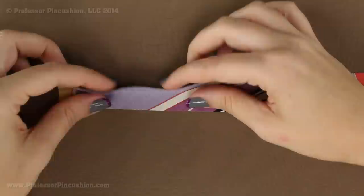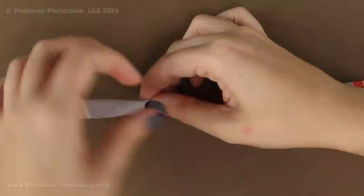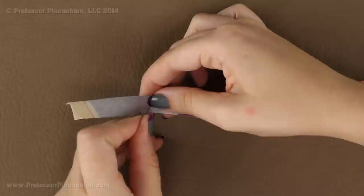Take your strip right side facing up and bring one raw edge to the other so we are folding it in half with the right side on the inside. I am going to pin all along this raw edge to hold it together so we can stitch it.